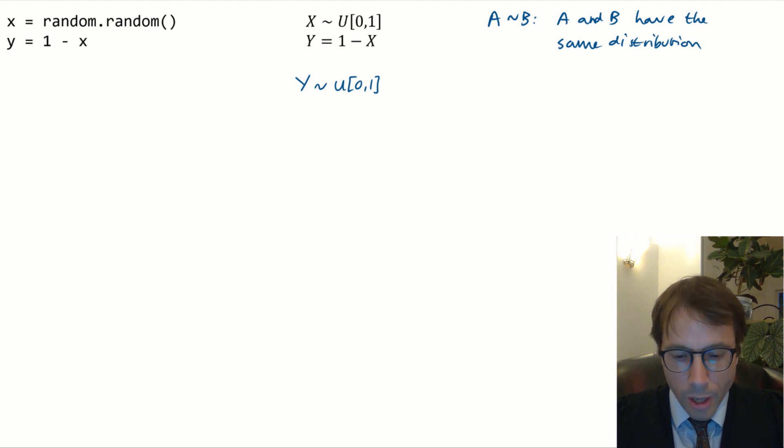We didn't generate y by calling the uniform random number generator. The twiddles is a statement about equality of distributions.